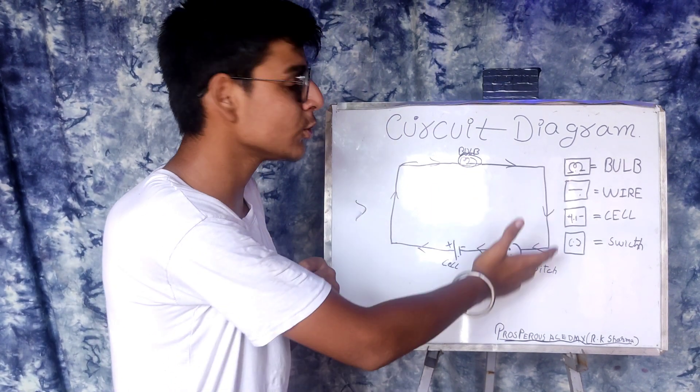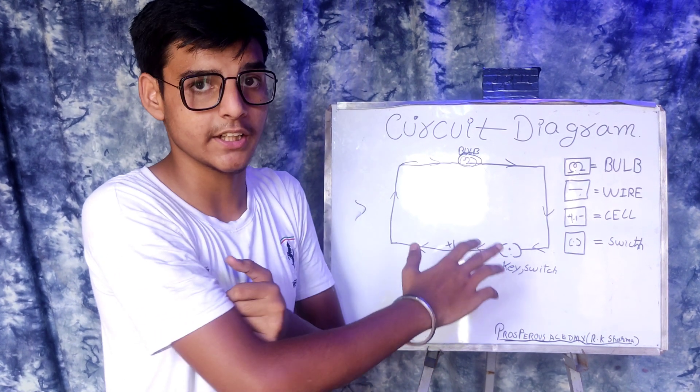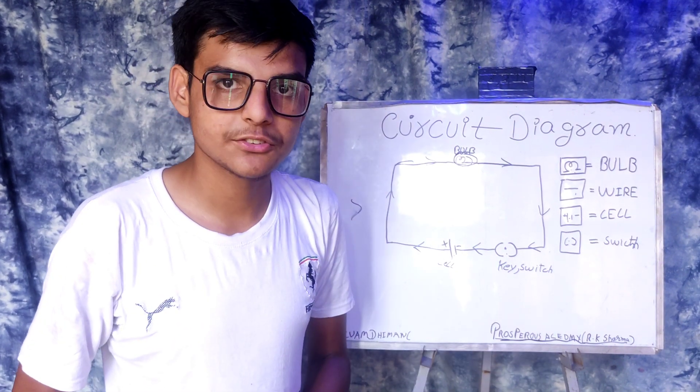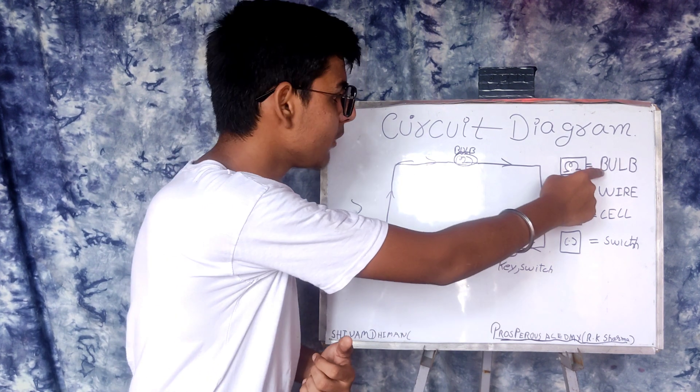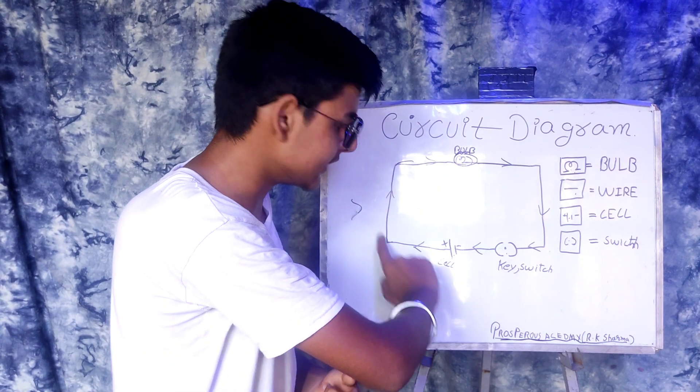Here's the circuit diagram and these are the most common things which are used to make a circuit diagram. First, we have the bulb. This symbol represents the bulb and here is the bulb in this circuit.